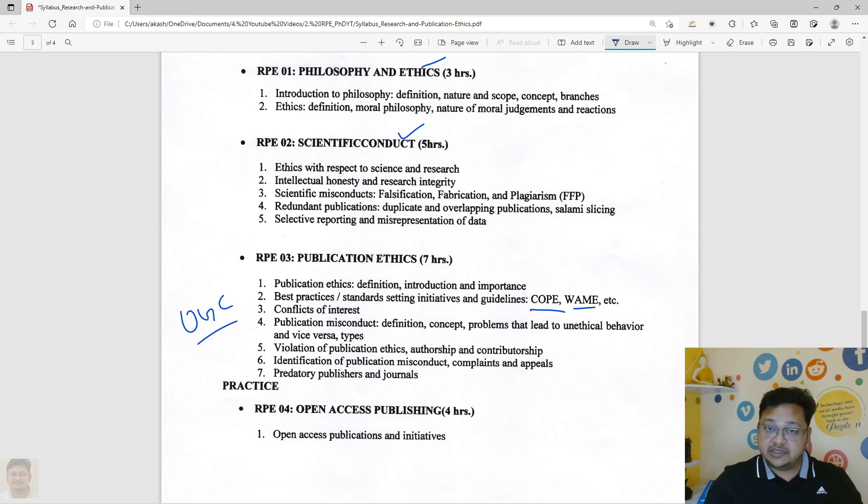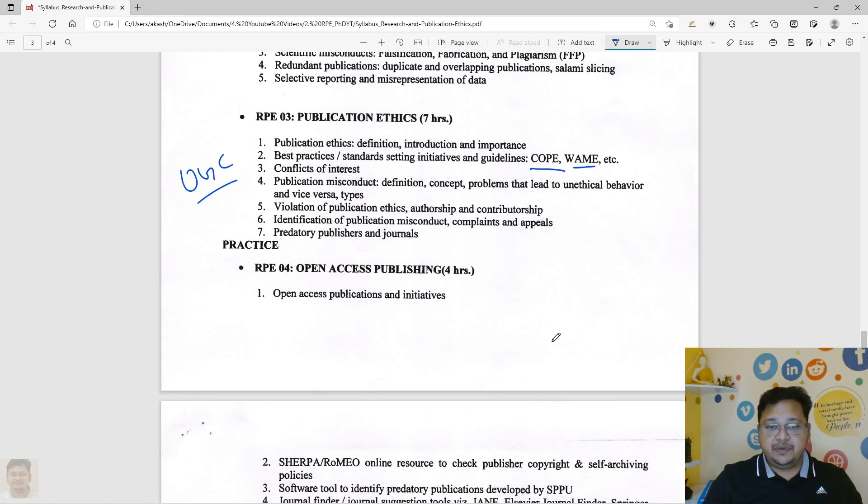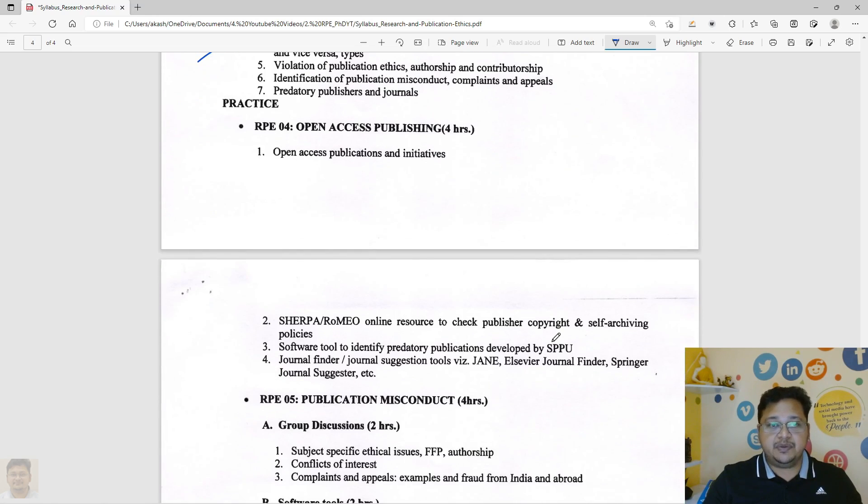We'll discuss what will happen or what can happen and what might happen if somebody makes some kind of mistake knowingly or unknowingly. Other than that, the other 50% of the coursework is practice, where basically the practice, where this RPE04 is about the open access publication or publishing.